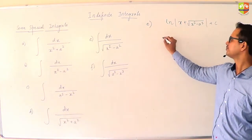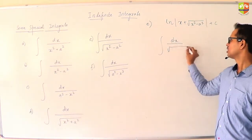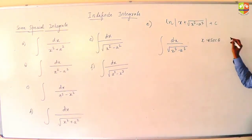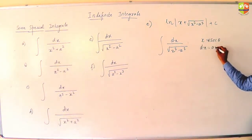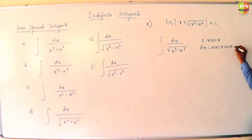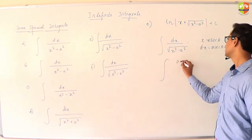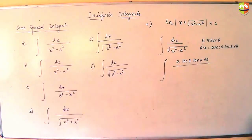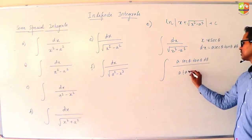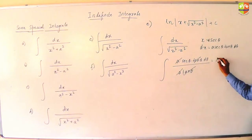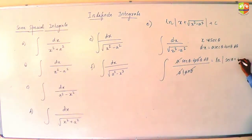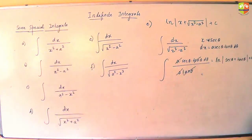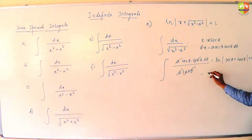E again the approach is same. We substitute x as sec theta, a sec theta. So dx becomes a sec theta tan theta d theta. So the numerator will become this term. The numerator will become a tan theta. So again, integration of this will become a sec theta plus tan theta. But this time, since your substitution is in terms of a sec theta, other time it was a tan theta, so things will change slightly.